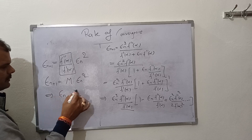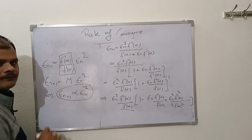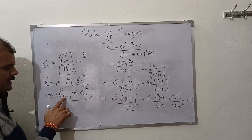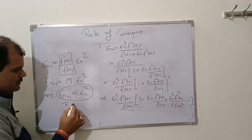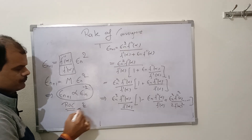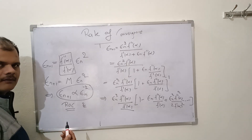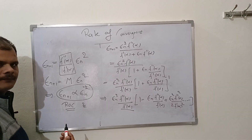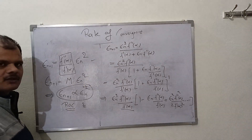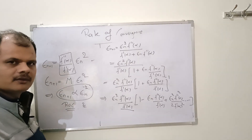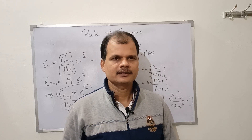So epsilon_(n+1) is directly proportional to epsilon_n². This means the rate of convergence p = 2, which is also called quadratic convergence. So Newton-Raphson method has quadratic convergence — the rate of convergence is 2. In the same way we can find the rate of convergence of other numerical methods. Thank you very much for watching. Don't forget to subscribe, like, and share.